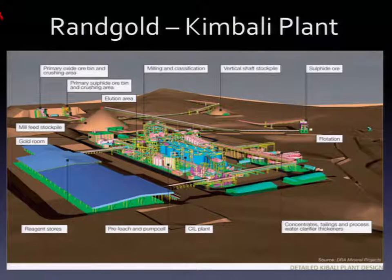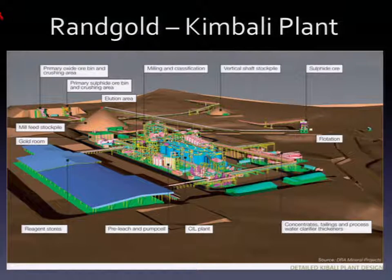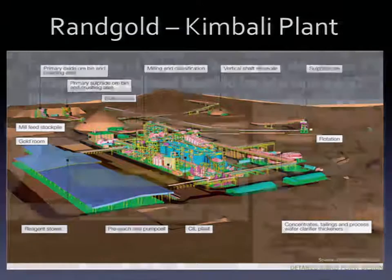The process plan basics are design criteria, flow sheet, mass balance, major equipment list, one-line diagrams for electricals, and a site plan. With that, you've got 90% of the way where you've got to go.